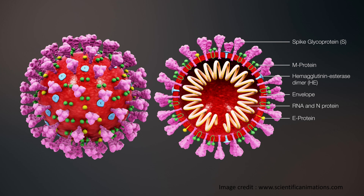It also has a short spike-like surface protein called hemagglutinin esterase. In electron micrographs, this enveloped region appears as electron-dense shells. The envelope protects the nucleocapsid, which is formed of numerous nucleocapsid N proteins, which in turn protects the RNA genome.